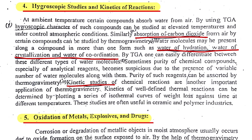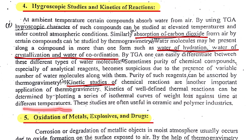The strength with which these three types of water are attached differs. By using TGA, we can determine whether water removed was water of hydration, crystallization, or coordination. This information also helps determine the purity of compounds, since continuous removal of water was a challenging problem. Kinetic information is obtained by plotting a series of isothermal curves of weight loss against time at different temperatures. This kinetic information is very important in ceramics and polymer industries.